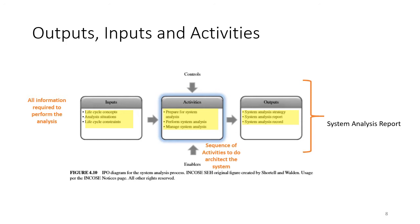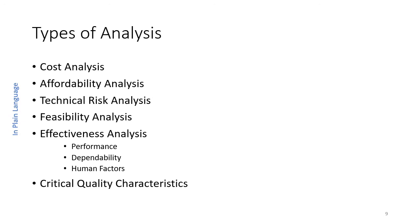The output is called the system analysis report. The activities involve gathering the information required to do the analysis, and the inputs are all the information needed to perform it. Types of analysis conducted include: cost analysis — everything is always about the money, tracking costs of the product; affordability analysis; technical risk analysis, which has to do with the safety and performance of the system; feasibility analysis; effectiveness analysis; and critical quality characteristics.